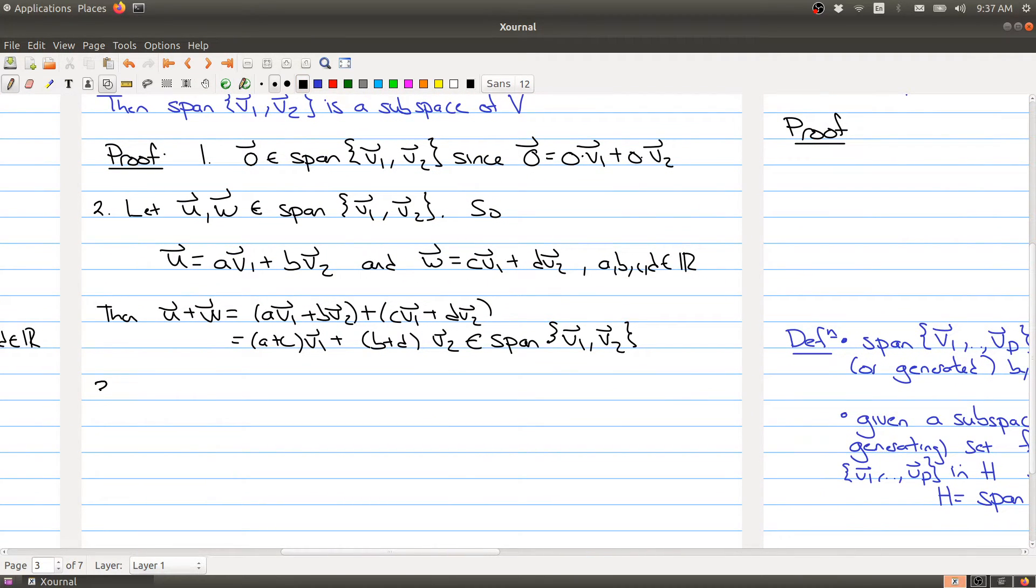Finally, let's look at the last condition about being closed under scalar multiplication. We're going to let U be inside of the span of V1 and V2. And then C times U will be equal to CA times V1 plus CB times V2. And now we again have another linear combination of V1 and V2. So this is inside of the span of V1 and V2.